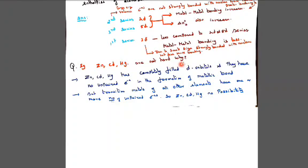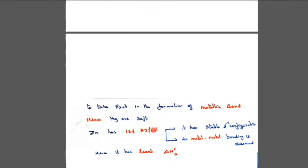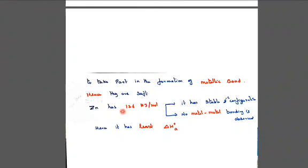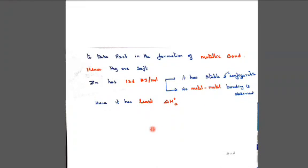For example, zinc, cadmium, mercury are not hard. I already told you it is completely filled orbitals, not having unpaired electrons. Transition metals having more number of unpaired electrons. Only that zero unpaired electrons will have a very soft one, not a hard one. No possibility to take part in formation of metallic bond. They are very soft. For example, zinc 126 kilojoules per mole. It has a stable electronic configuration. You should write in exam, these are the key points. No stable electronic configuration, no metal-metal bonding is observed. So it has very least enthalpy of atomization at STP.